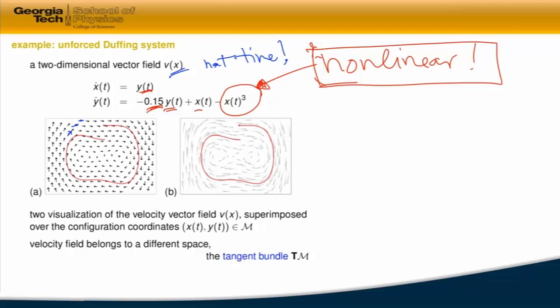We will only study autonomous flows because non-autonomous flows are much harder than what we want to discuss here. You can visualize the vector field as a bunch of arrows — that's fine for two-dimensional problems. It gets very hard in three dimensions to put a three-dimensional vector field at every point, and gets almost impossible beyond that.